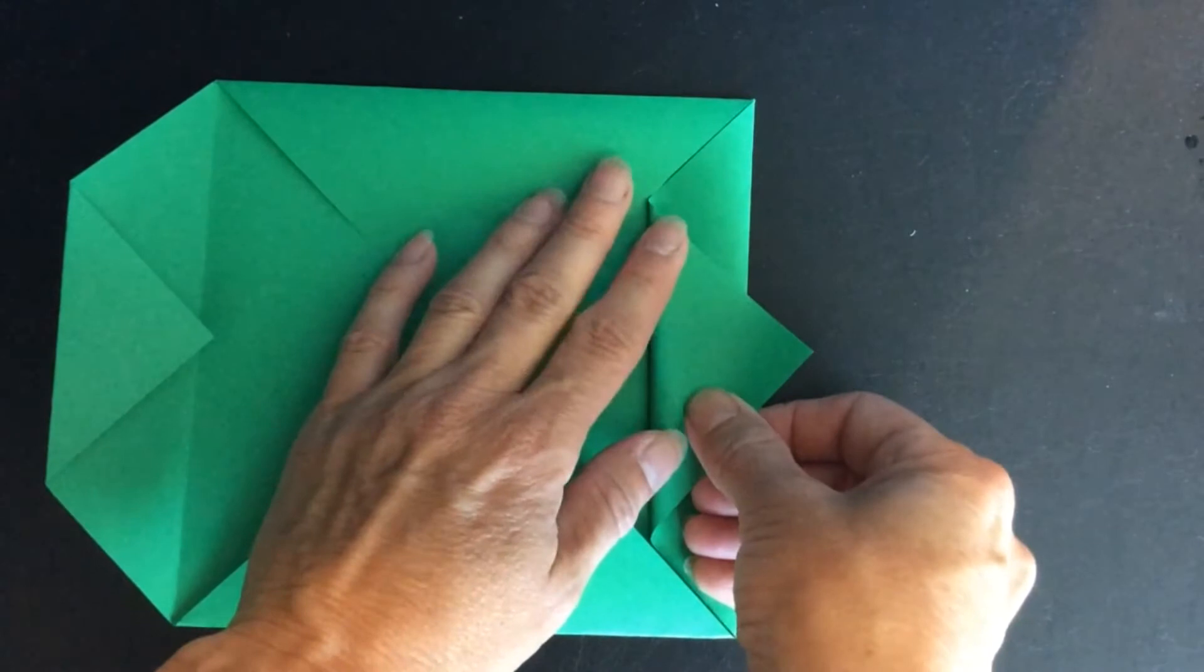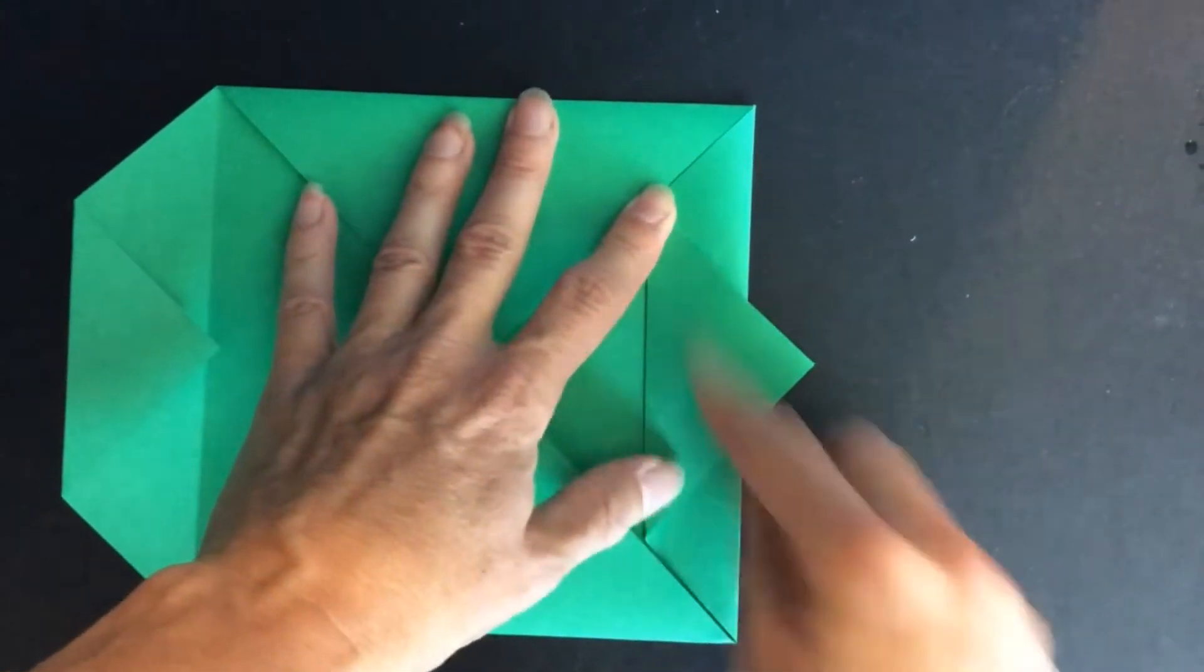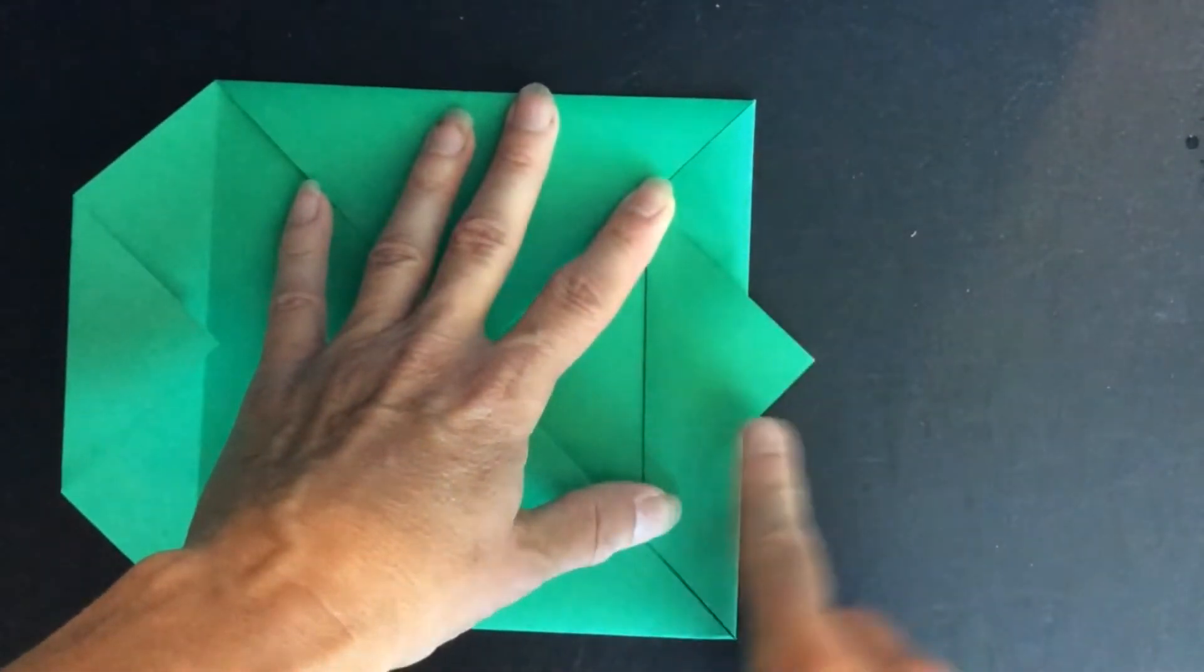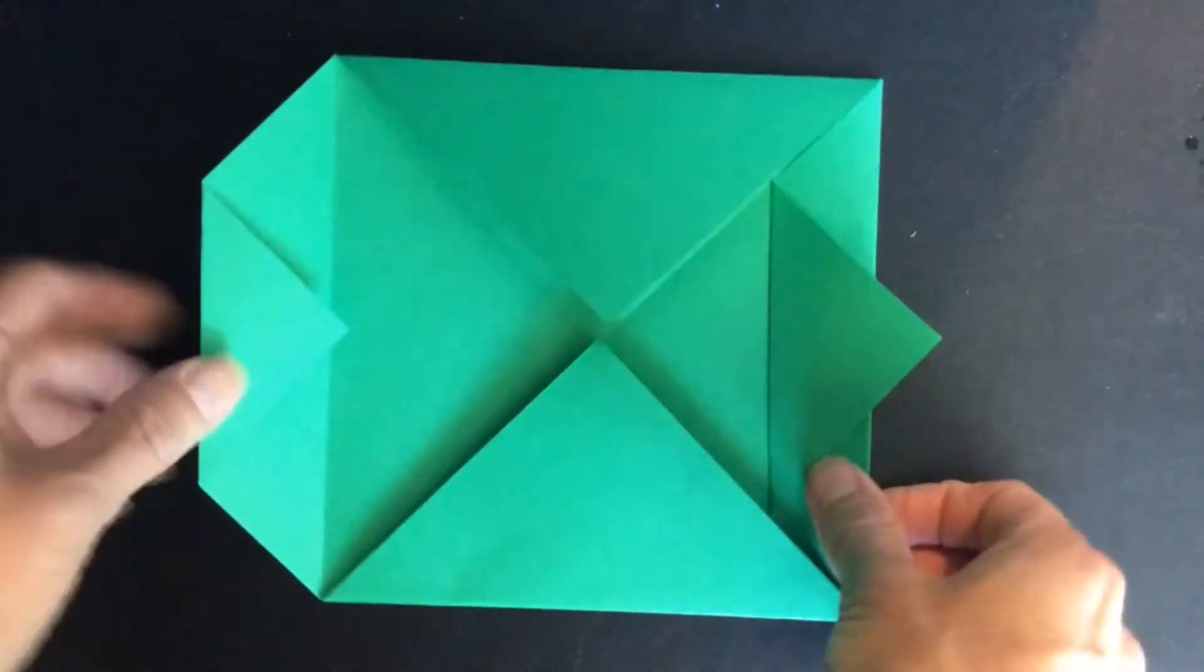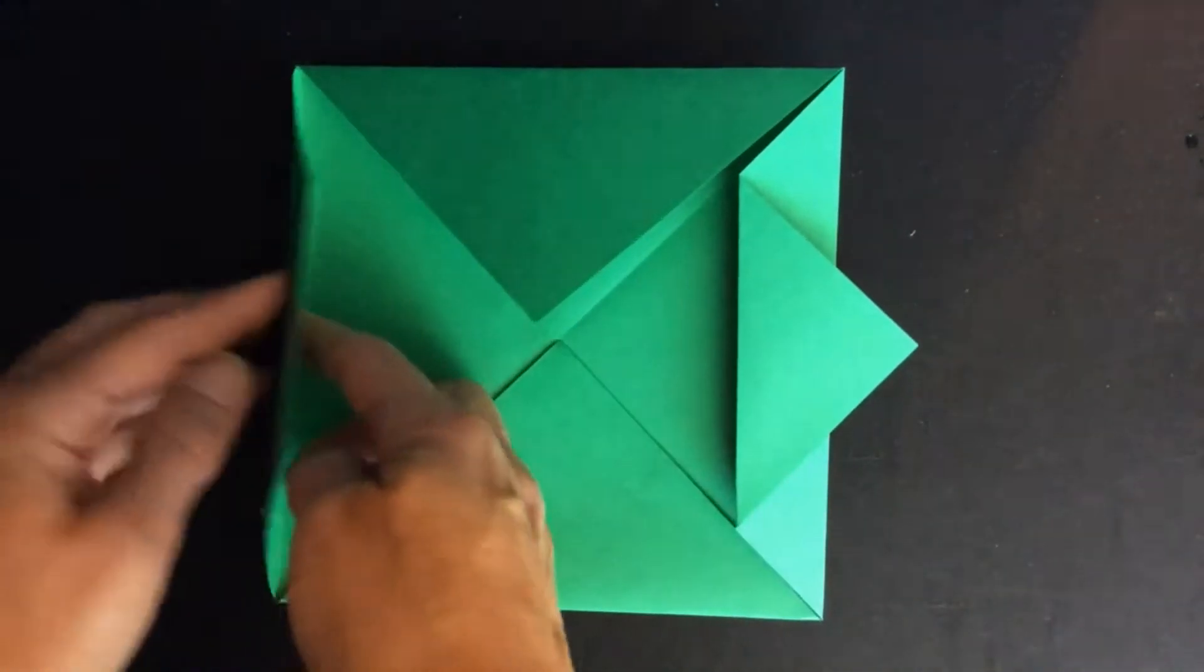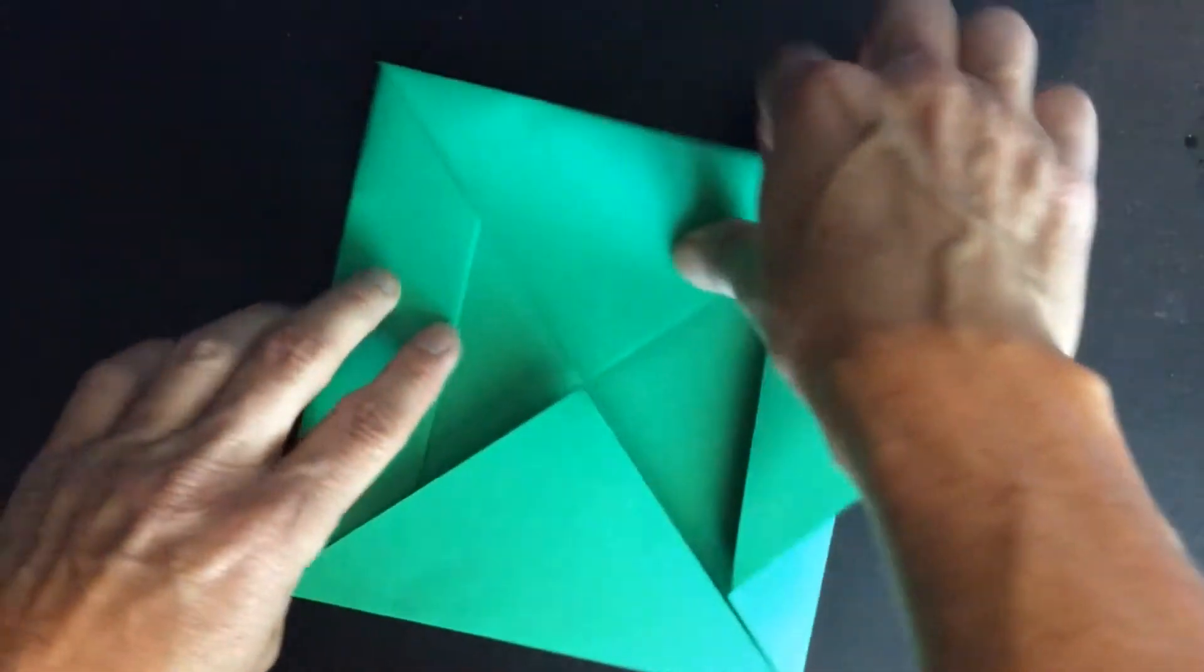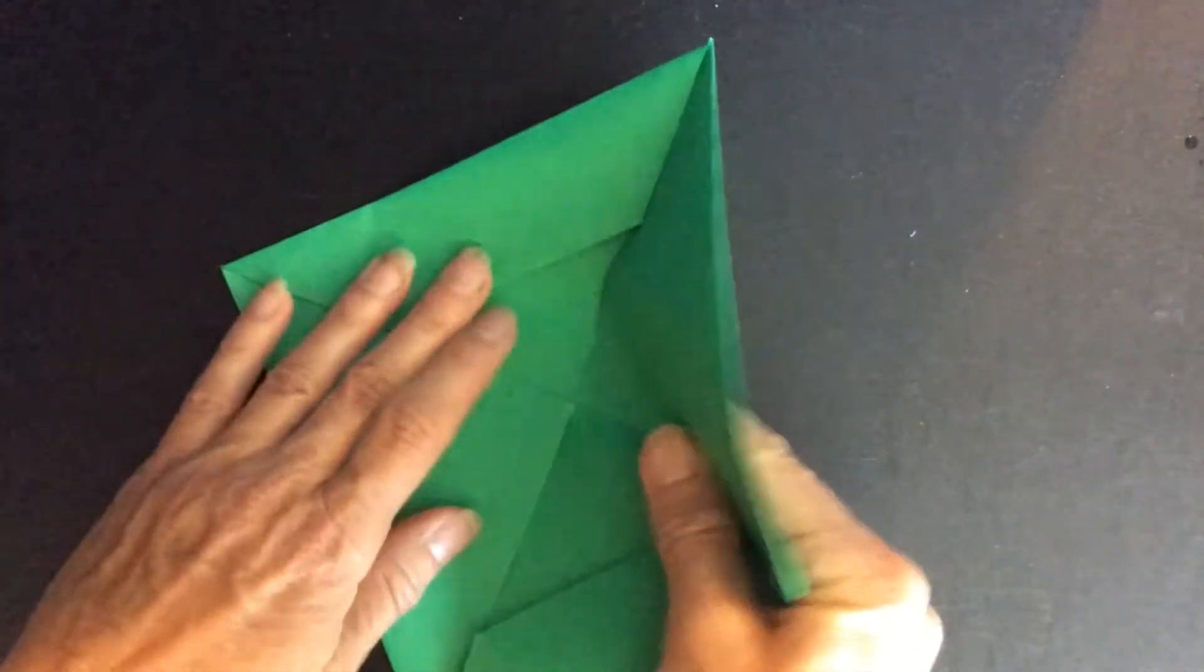Turn it in and fold it down, but have an edge of it sticking out past the edge of your paper. Fold this one in. And now we're going to fold it in half this way.